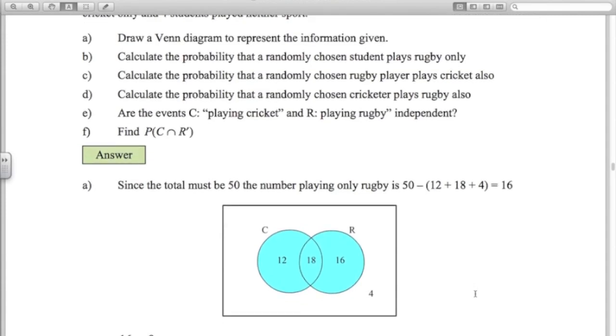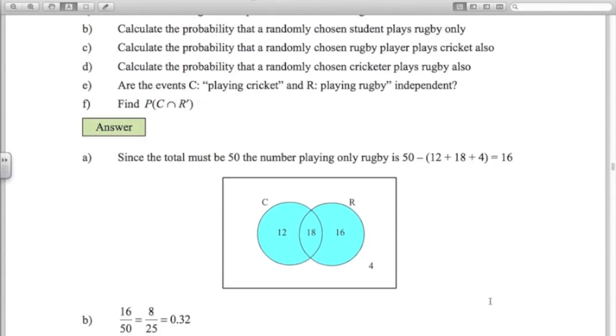So what's the probability that a randomly chosen student plays rugby only? We've got that one. 16 out of 50, which is 8 over 25 or 0.32. The probability that a randomly chosen rugby player plays cricket also? Now, in this question here, there's no word here that says given that. But if you read the question carefully, you'll see this is conditional probability. Calculate the probability that a randomly chosen rugby player. So given that we've got a rugby player, what's the probability they play cricket also?